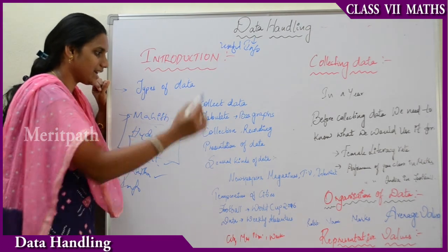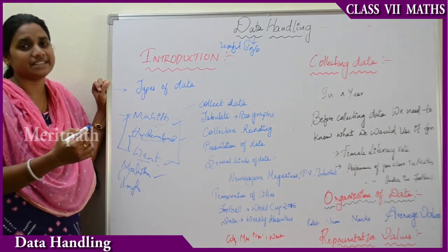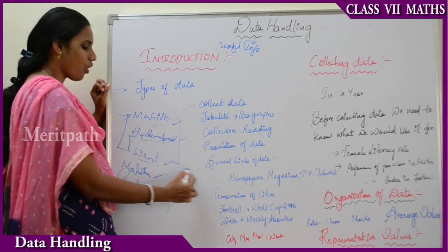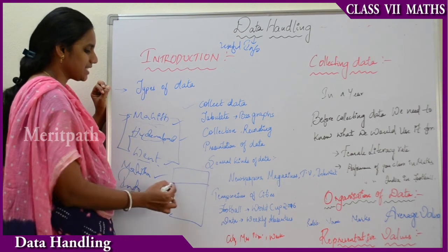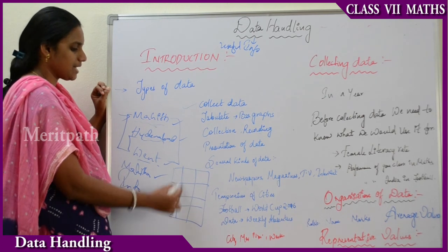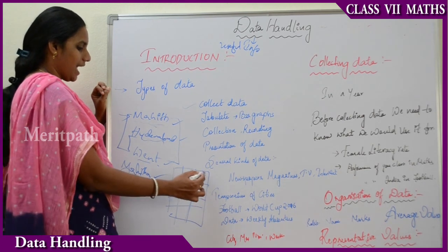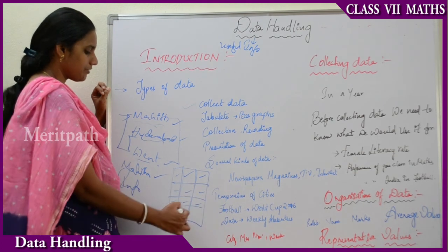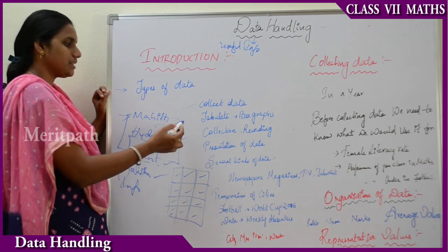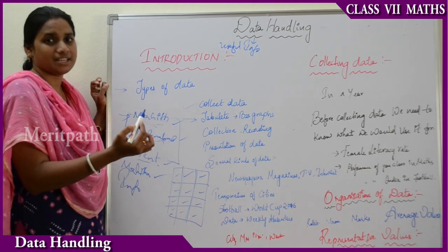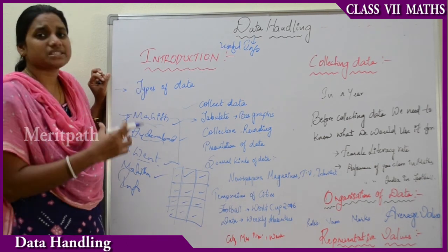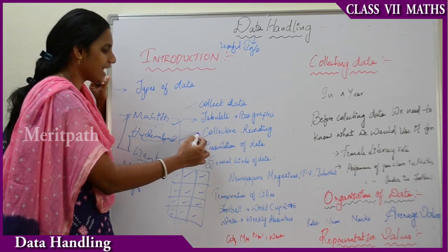That is collection of data. Tabulating means writing the data in tabular form, that is having rows and columns. I hope you can see here on the paper — this is the table which has some rows and some columns. This type of tabular form is known as tabulation of information. Some other graphs such as bar graphs, pie charts, and line graphs — all those are the graphical representation of data.